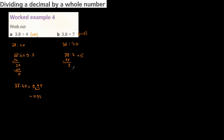In 3 we don't have a 7, so we add a decimal point and a zero. In 30 we have 4 times 7 equals 28, remainder 2. We add one more zero. In 20 divided by 7, we have 2 times 7 equals 14, remainder 6. In 60 we have more decimals — two decimal places is enough. So 38 divided by 7 is approximately 5.42.